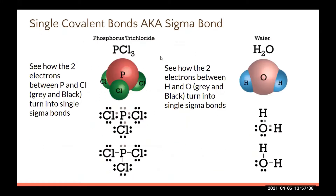When looking at sigma bonds, different elements need different things. Take phosphorus trichloride, PCl3. Phosphorus is in column 15 and has five valence electrons, so it needs three more. Chlorine is in column 17 and only needs one. Since phosphorus needs three and chlorine needs one, you use three chlorines — that's how you think about the ratios for covalent bonding.